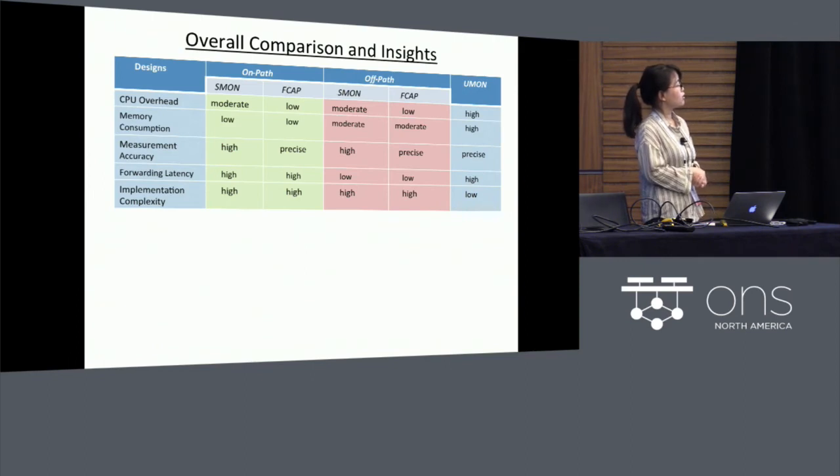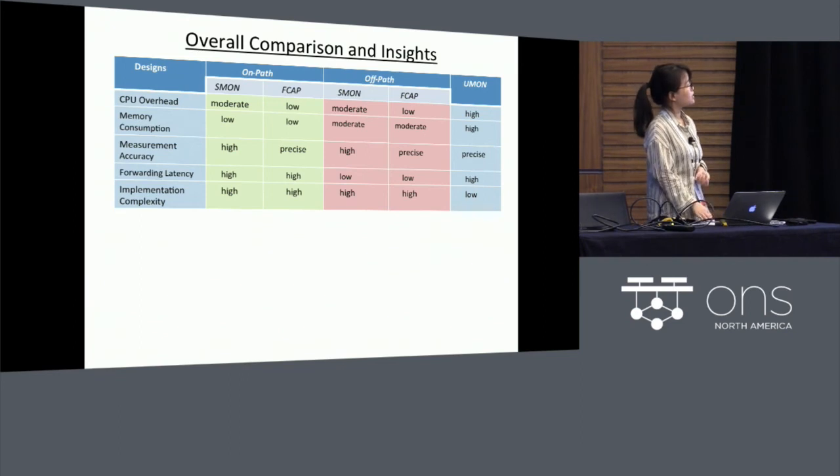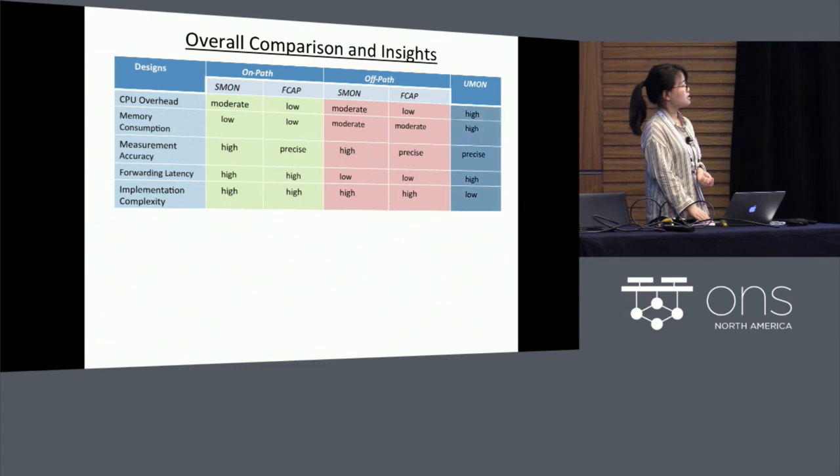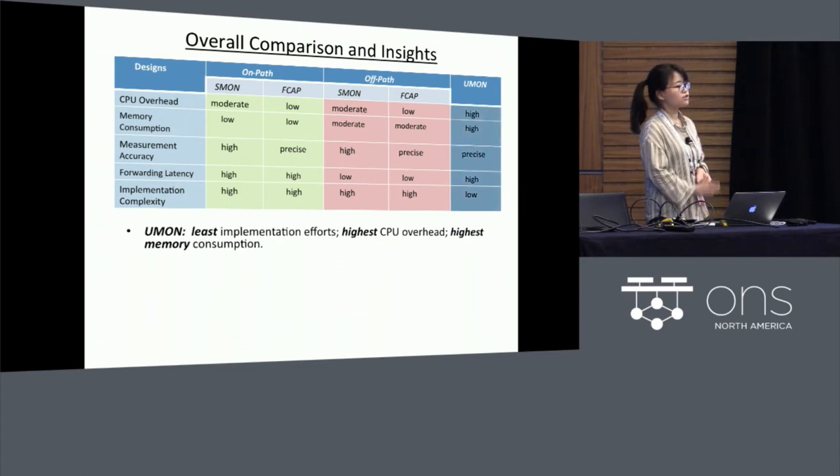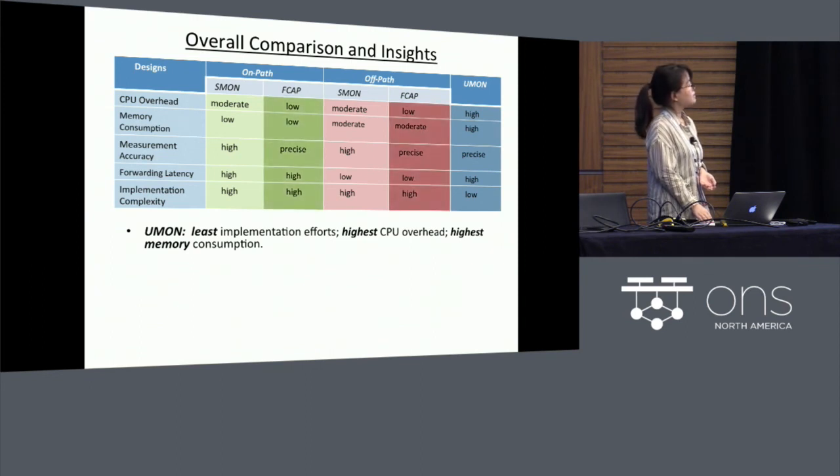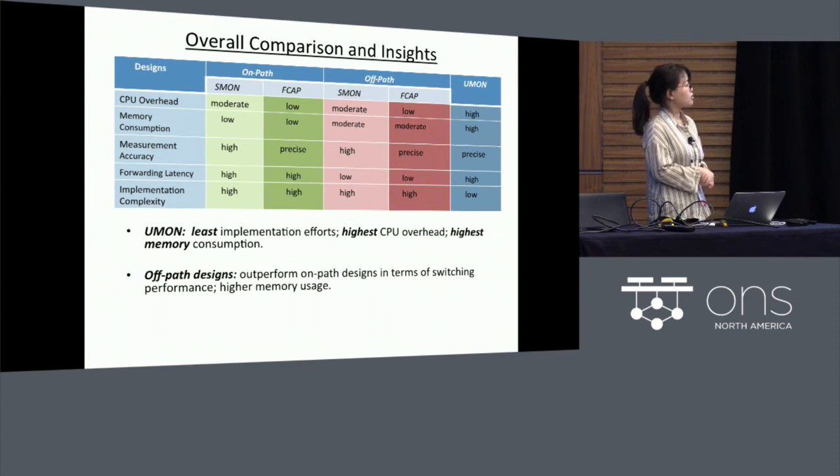And here is the overall comparison of the pros and cons of the different monitoring designs, in terms of different metrics. From this table, we can obtain the following insights. First of all, UMON requires the least implementation efforts, since it requires no modifications to the kernel code base. Besides, the off-path designs outperform the on-path designs, in terms of both the resource consumption, as well as the impact on the switching performance.